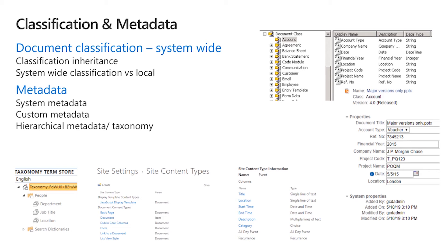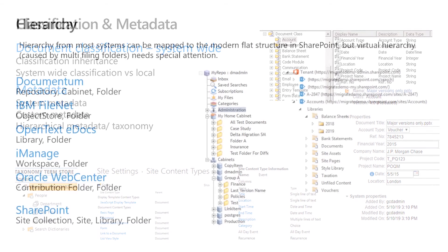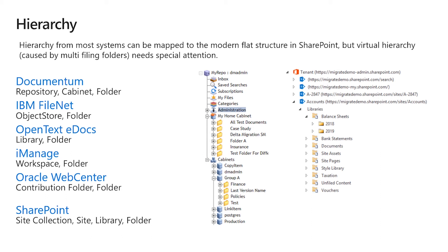Fortunately, classification is probably one area where SharePoint is very strong. You can take most classification from other systems into SharePoint quite easily. Most systems like Filenet have document classes in a hierarchy, which can be taken across as content types. You can have very complex taxonomy in other systems, and SharePoint Online provides good support for taxonomy with a central taxonomy store. System metadata like created-by and modified-by dates is standard, and custom metadata is delivered through content types and custom columns in SharePoint.